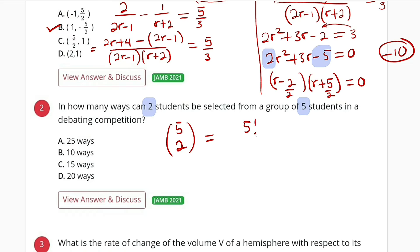5 factorial divided by (5 minus 2) factorial times 2 factorial. This equals 5! divided by 3! times 2!. Five factorial means 5 × 4 × 3 × 2 × 1.